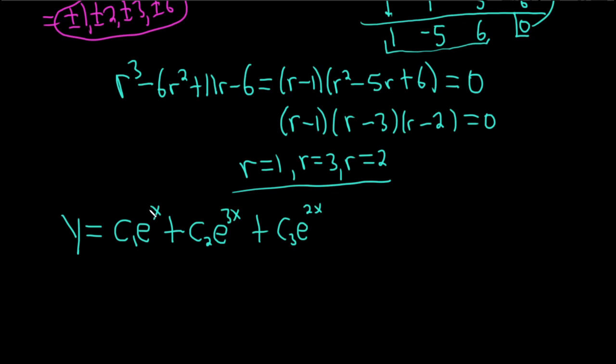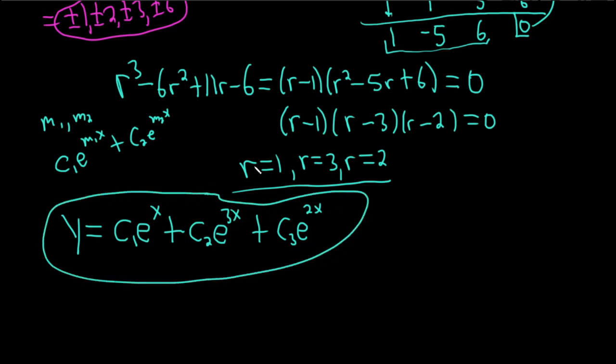So whenever you have distinct real roots, you just put them in front of the x. So like if you had m1 and m2 as roots, it would be c1 e to the m1x, plus c2 e to the m2x. And then another one would be c3 e to the m3x. That's exactly what we did here. We have a 1 here, the 3 and the 2. And so that would be the solution to the differential equation.